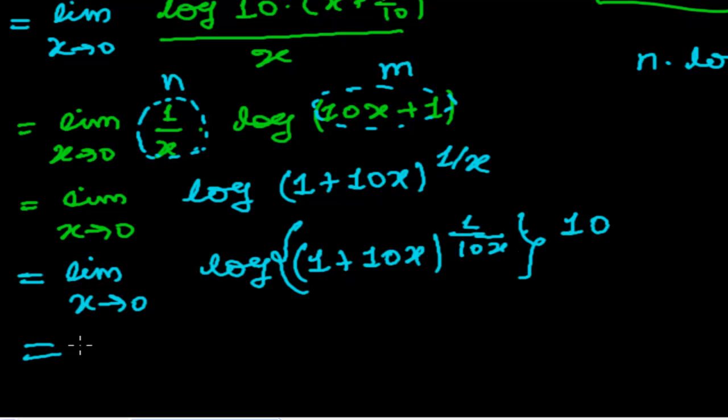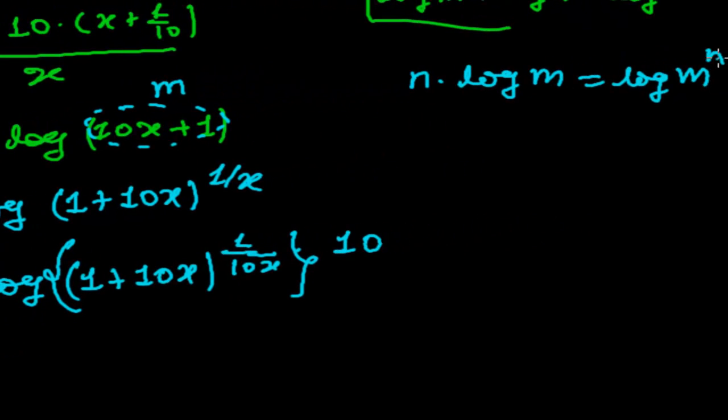So in the whole this expression, I have to write the power 10. Now again, the same formula here. If it is in the form log m to the power n, I can write in the form of n times log m. This whole now work as a single one like m, and m to the power, this 10 will work as n. This whole will work as m.